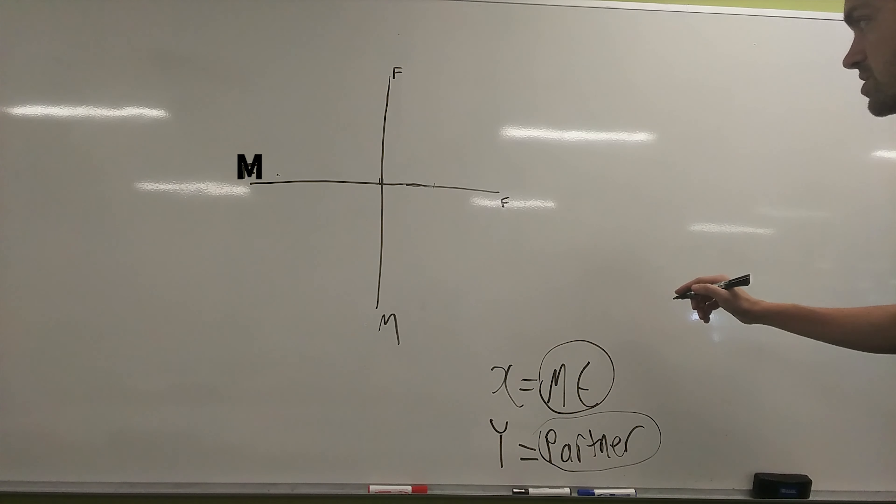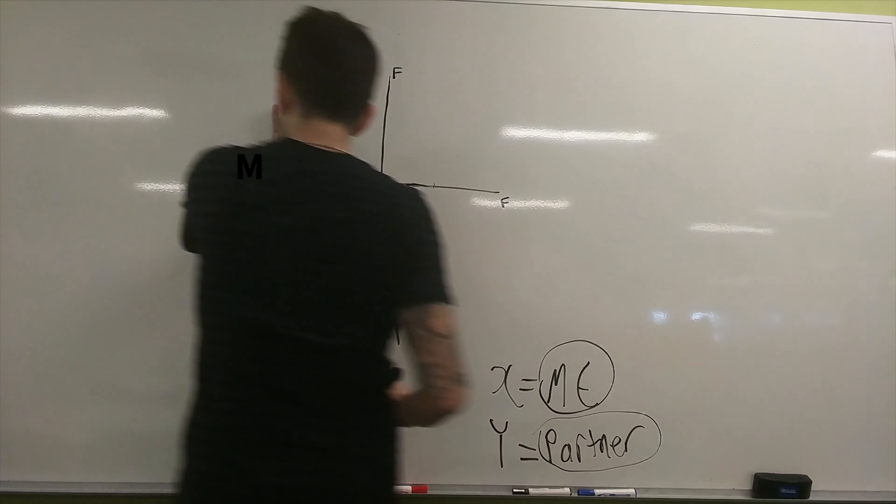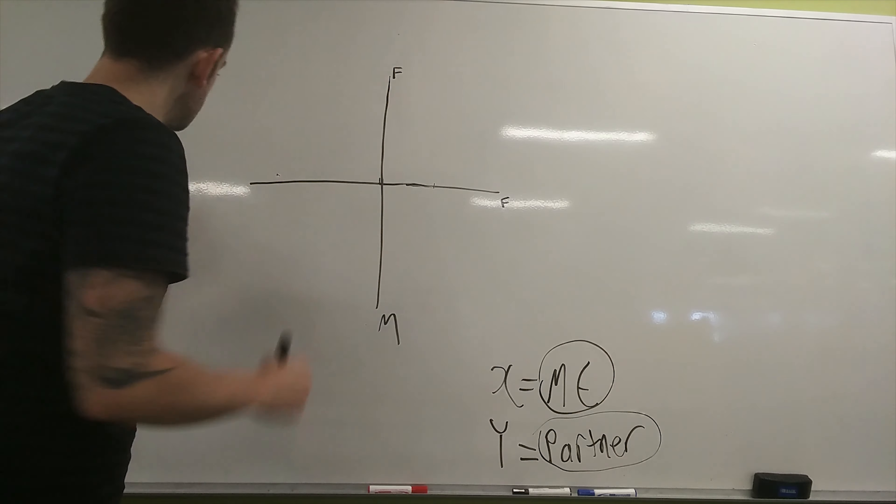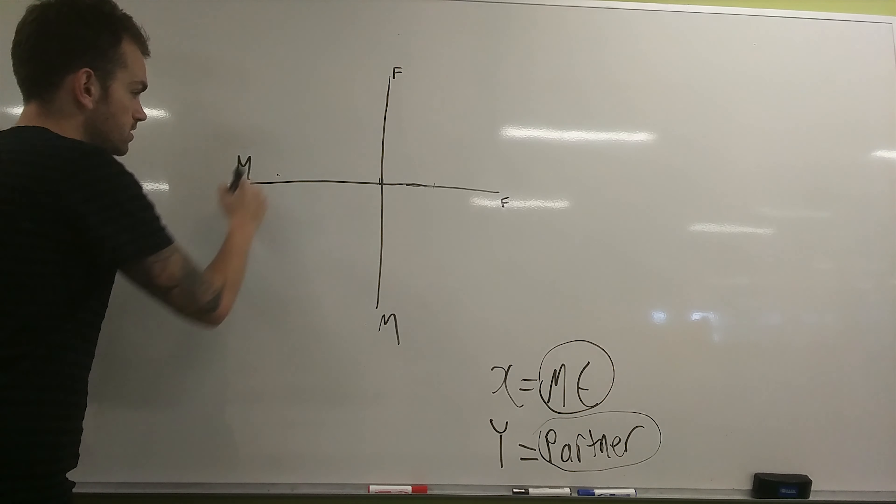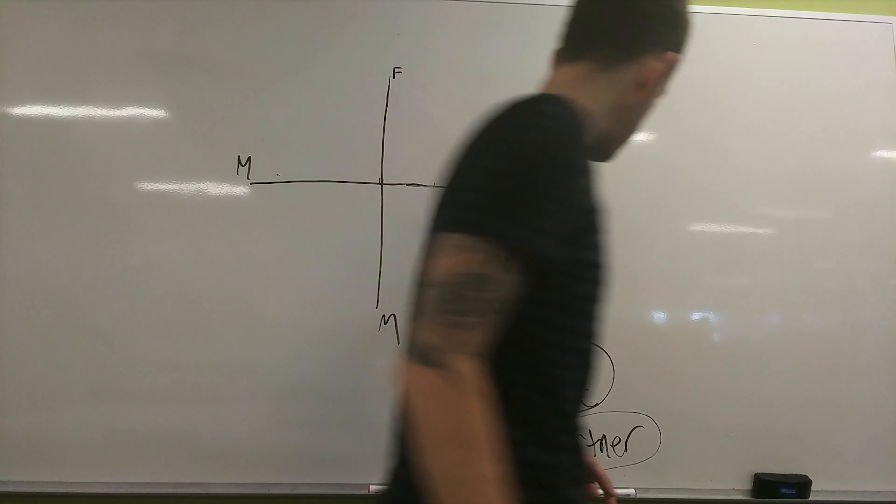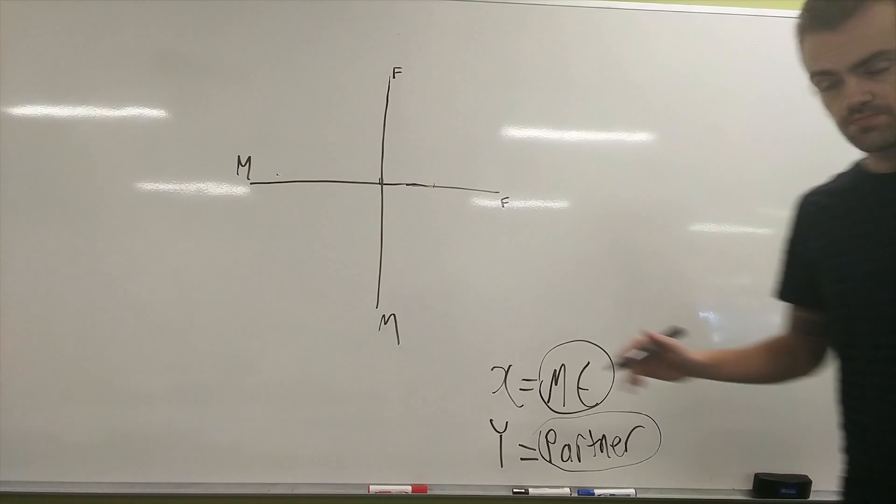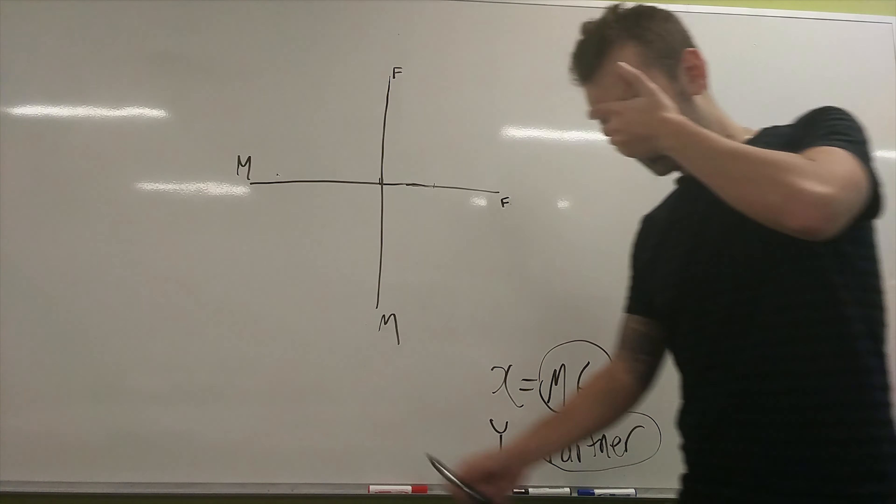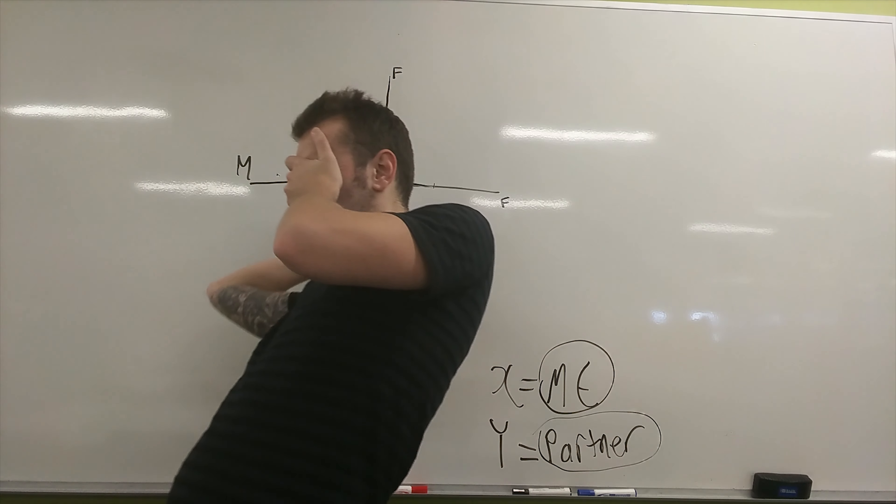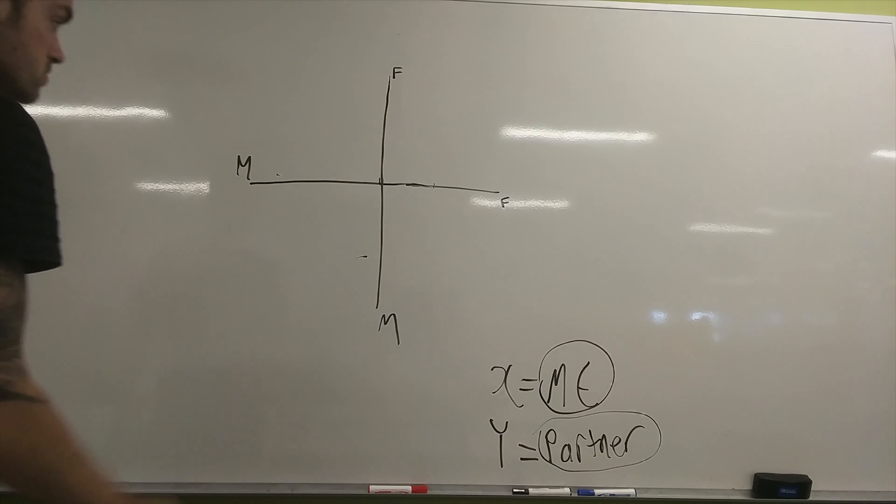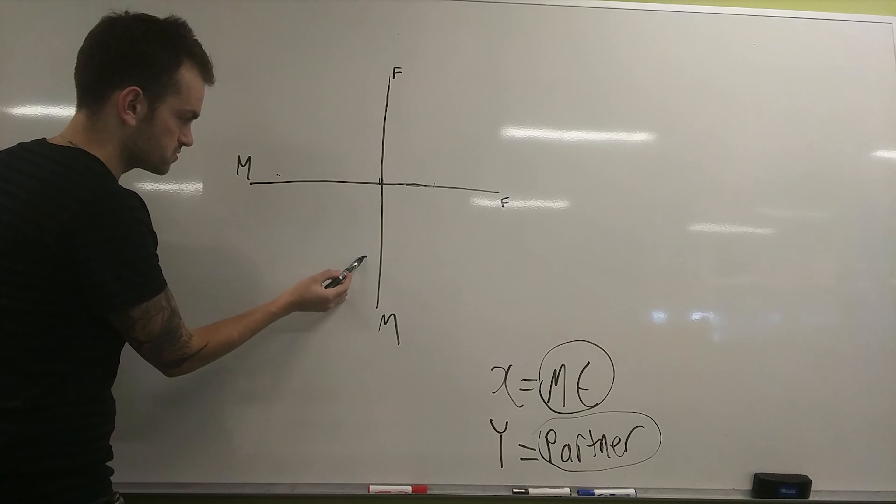Oops. Not male there. That should be female. And then you get male here, and you get female here. So, this, just, I'm not going to assume people know these things, even though they probably do. This line right here is called the x-axis. This line right here is called the y-axis.